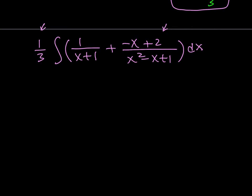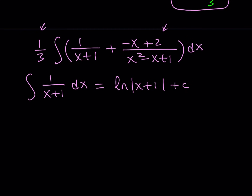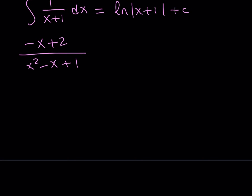The integral of 1 over x plus 1 is fairly easy — it's just the natural log. The second part needs more work. We have (negative x plus 2) divided by (x squared minus x plus 1). What I'd like to do is get the derivative of x squared minus x plus 1 in the numerator if possible. The derivative of x squared minus x plus 1 is 2x minus 1, so it would be nice to have 2x minus 1 in the numerator.